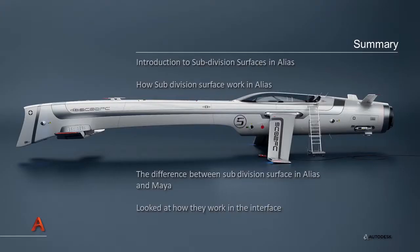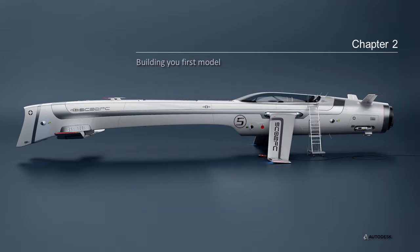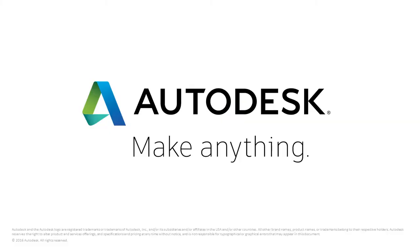To summarize: we've introduced subdivision surfaces in Alias and how you can work with them, looked at the differences between subdivision surfaces in Alias and Maya — predominantly NURBS versus polygons — and had a practical look at how they work in the interface. The next chapter will focus on building your first model, how to approach it, and using subdivision surfacing tools in combination with other tools in the interface.